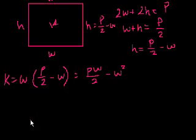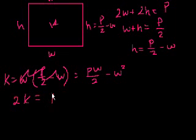Let's see, when I look at the solution, they don't have any fractions in it. So let's multiply both sides of the equation by 2. We could ignore this. k equals pw over 2 minus w squared. Multiply both sides by 2, you get 2k equals pw minus w squared.